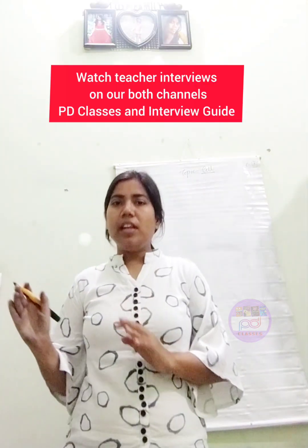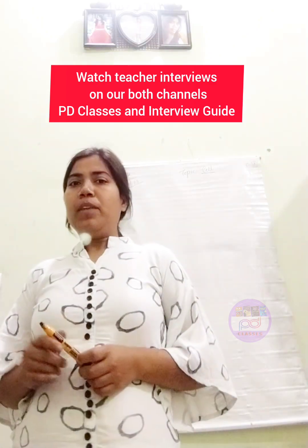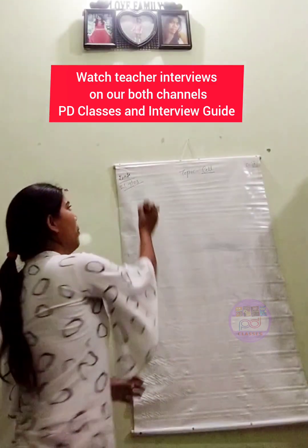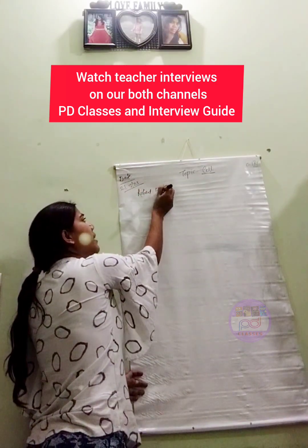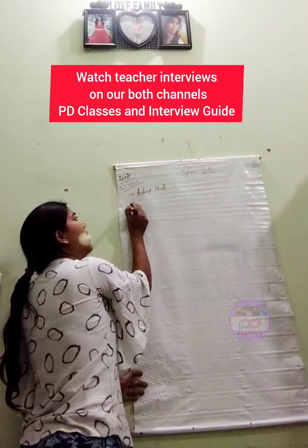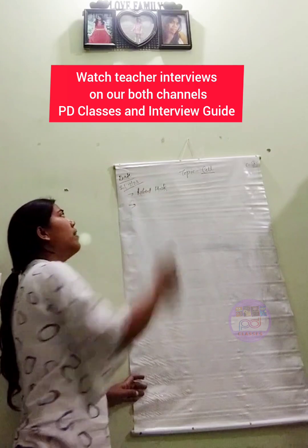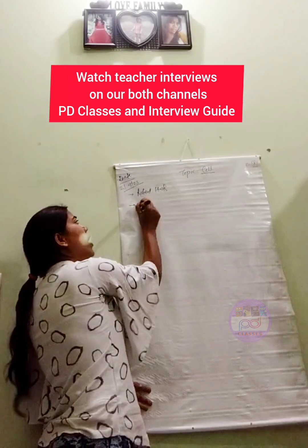What is that? Cell is the structural and functional unit of life. Basically, the cell was discovered by Robert Hooke. After that, the cell theory was given by Schleiden and Schwan.